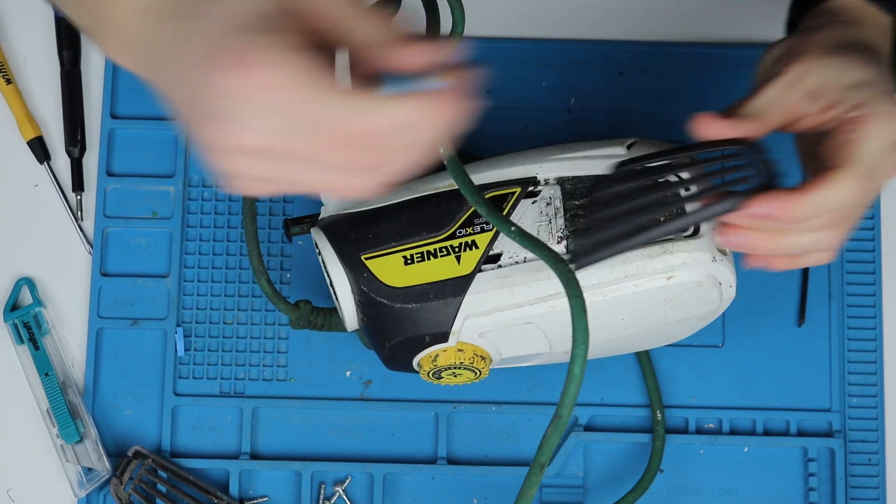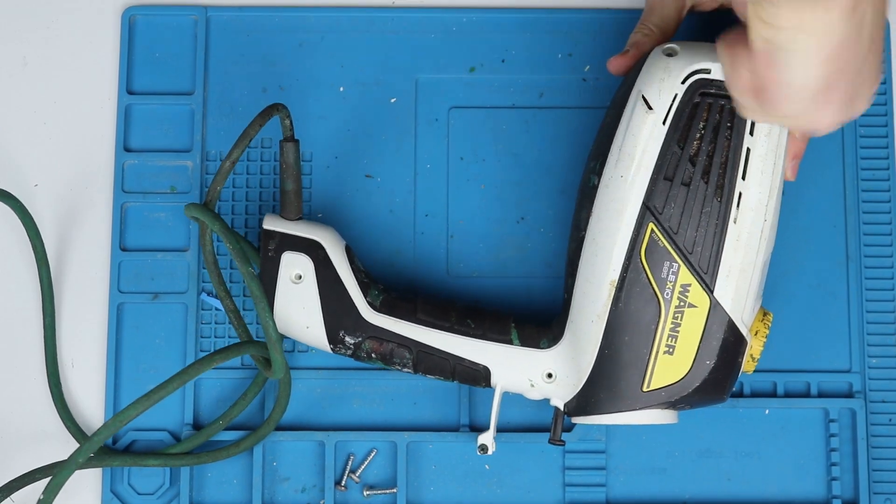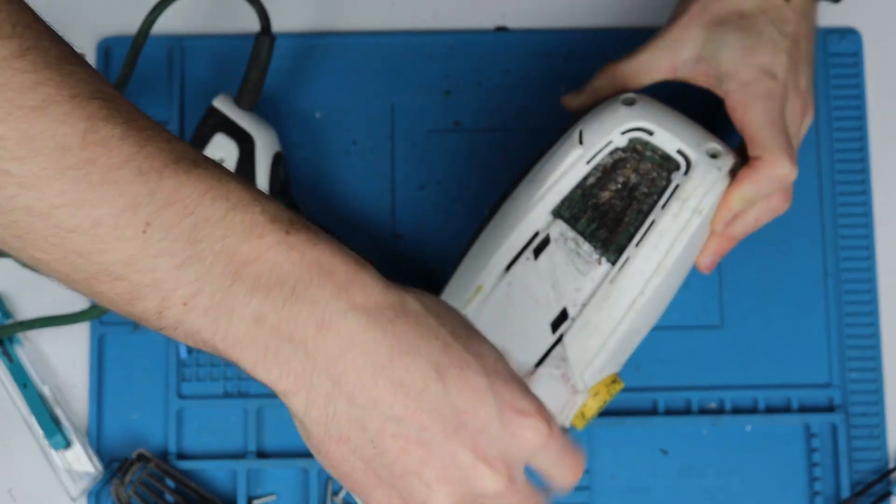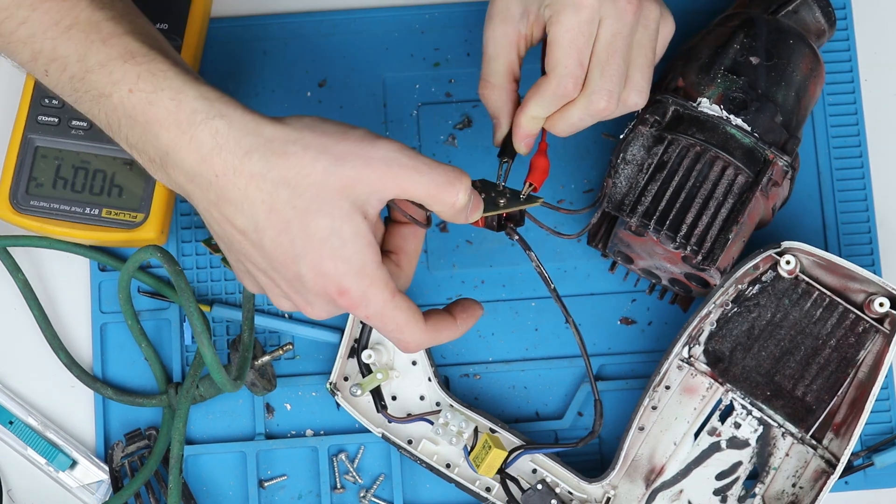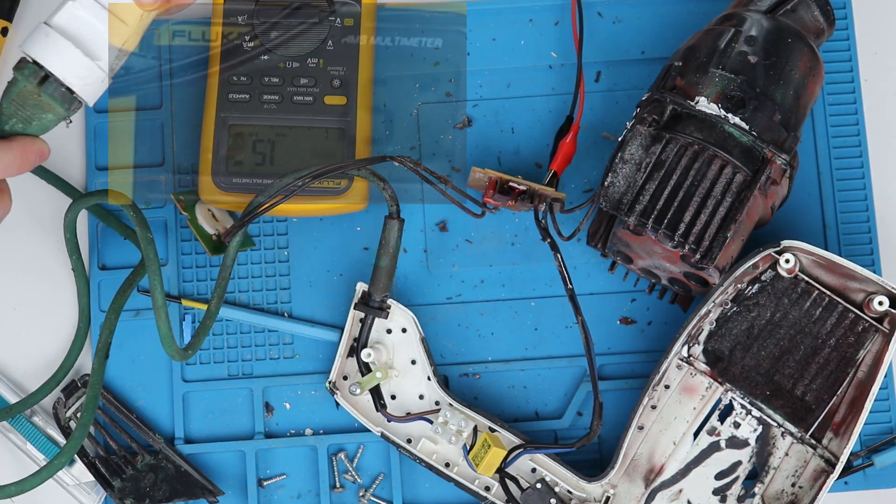We need to remove the filter cover, the screws, and the plastic under which we can find one more screw. First I made sure the button works and tested the fuse. Since everything checks out, let's plug it in and test the voltage on the motor.